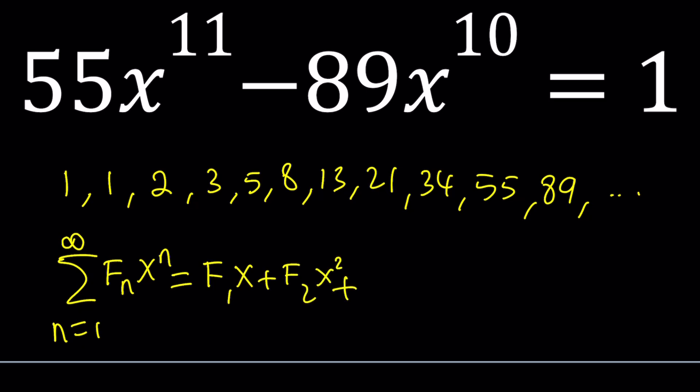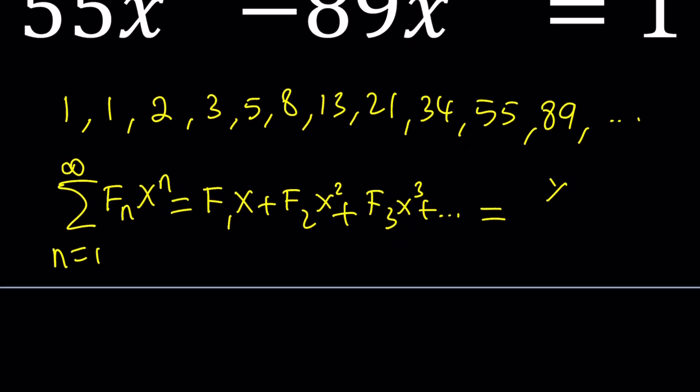And this is going to equal something in terms of x, of course. And that's actually going to be x over 1 minus x minus x squared. If you look into the generating functions, you'll get that. And the nth Fibonacci number, which is this one, is represented by f sub n.